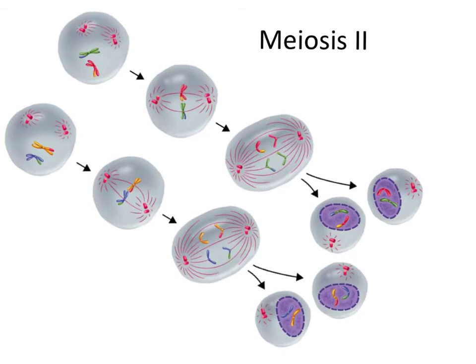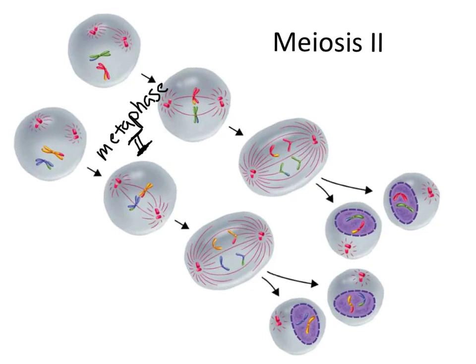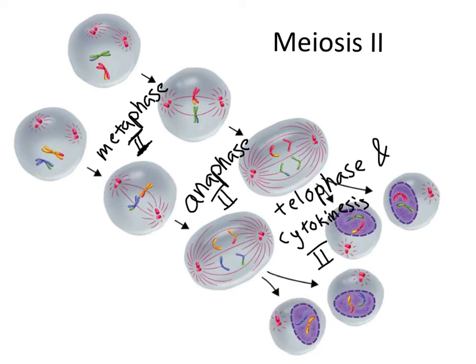And thanks to those two laws, by the time we start meiosis II, we've already got two genetically distinct will-be gametes. Now they do need to go through one more round of division, and in this case, the now haploid number of chromosomes line up in a single line, just like in mitosis during metaphase II. Then the sister chromatids are pulled apart into their own unduplicated chromosomes, which are then pulled by the spindle fibers to either side of the cell during anaphase II. And then lastly, after telophase II and cytokinesis, four genetically distinct gametes are made — either sperm or egg. And you can see those unduplicated chromosomes inside have very different patternings on them, thanks to the independent assortment that resulted from crossing over and the lining up of chromosomes in two lines.